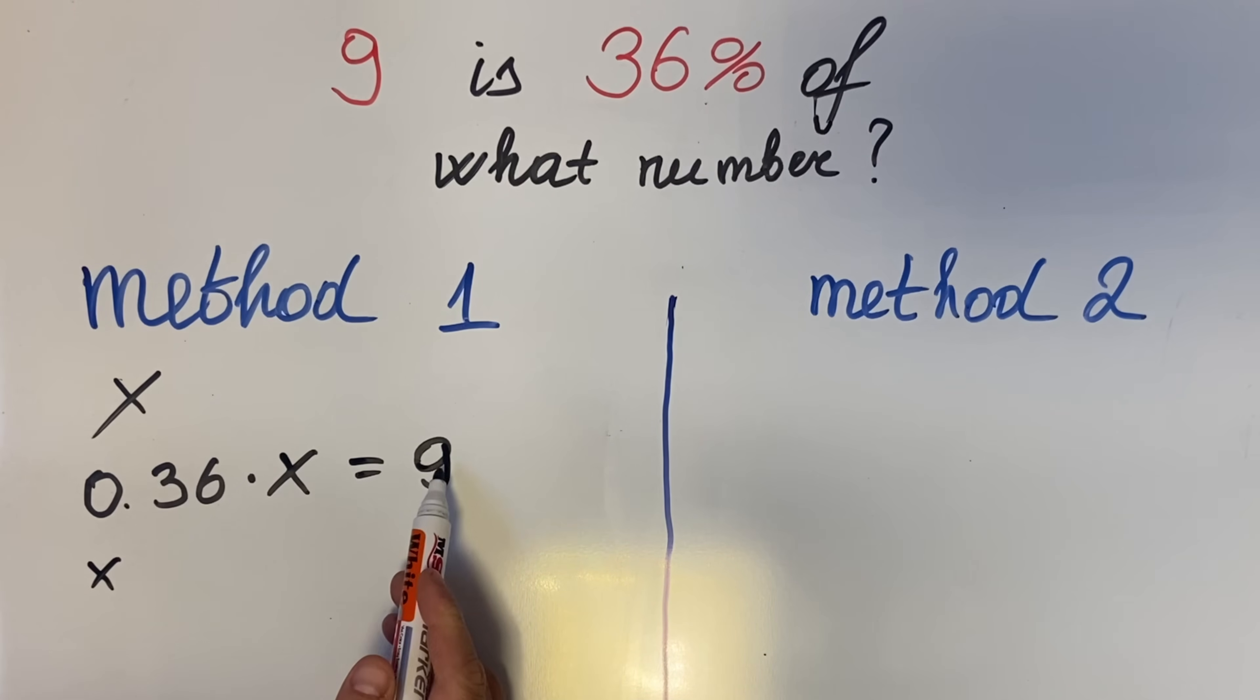So x is 9 over 0.36. When we have multiplication of two numbers and need to figure out one of the numbers, we take the result and divide it by the number we know. So x is 9 divided by 0.36.